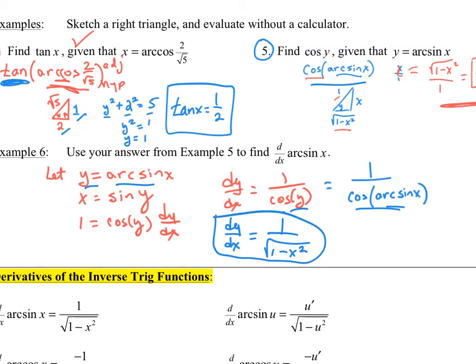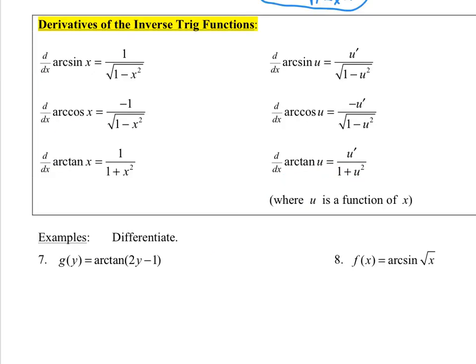You can similarly derive the other inverse trig functions, but we'll just give them to you. The derivative of arc sine is 1 over √(1 − u²). Arc cosine is just the opposite sign from arc sine. The derivative of arc tangent is 1 over (1 + u²), which is a little different. In terms of u, chain off whatever u prime is in the numerators. These are what you get when you have a composition of functions.